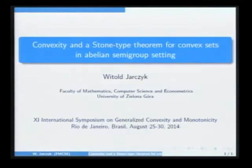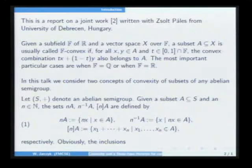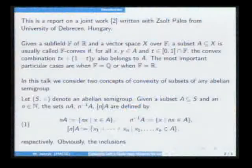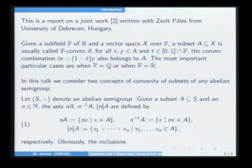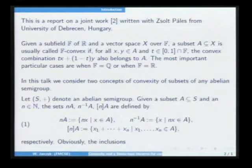We propose two parallel notions, quite different. One of them will be convexity and another one co-convexity. It is known that if we have an arbitrary subfield F of the real field and a vector space X over F, a subset A of this space is usually called F-convex if all x and y from A and arbitrary t from the field in the interval (0,1), the convex combination also belongs to A. The most important cases are when F is rational and when F is the field of all reals.